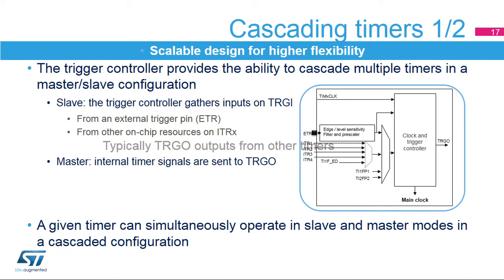The trigger controller allows cascading multiple timers in a master-slave configuration. A timer can control one or more timers as master or be controlled by another timer as slave. In master mode, it can redirect internal control signals to a TRGO trigger output. In slave mode, it gathers multiple inputs on TRGI, the main trigger input coming from the external trigger pin ETR or from one of the four internal trigger inputs ITR1 to ITR4. The input capture 1 and 2 pins can also be used as internal triggers. A given timer can simultaneously operate in slave and master modes, accepting input triggers while providing output triggers.